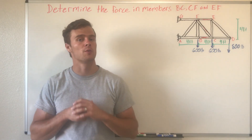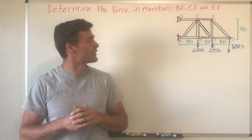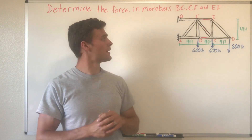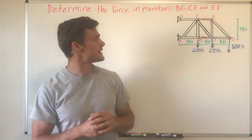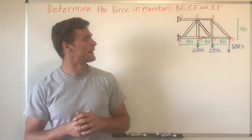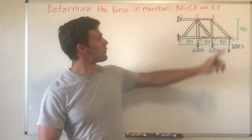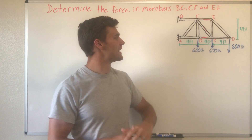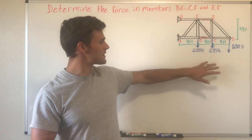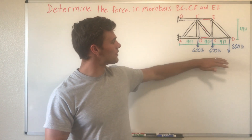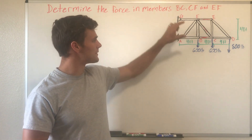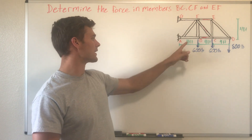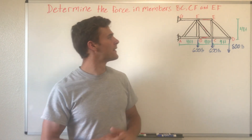In this example problem, what we need to do is solve for the internal forces of members BC, CF, and EF, which are the members I've highlighted in red. We have this truss with three loads on it, all pulling down, and it is pin-connected on a wall at two points.